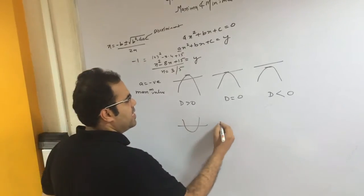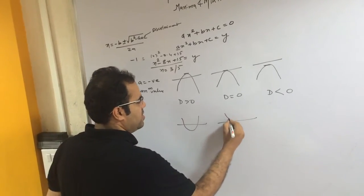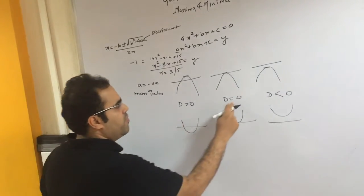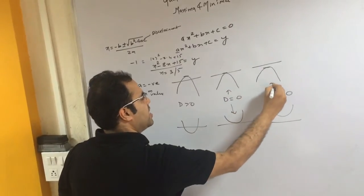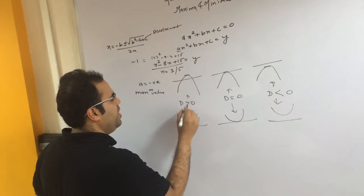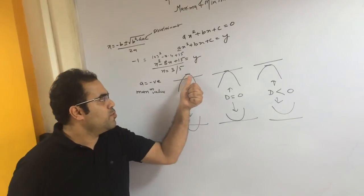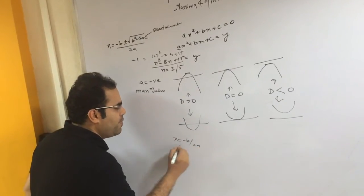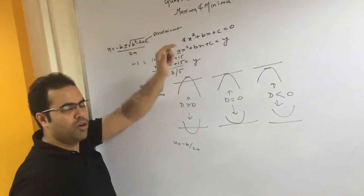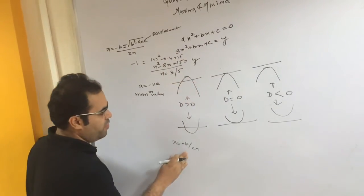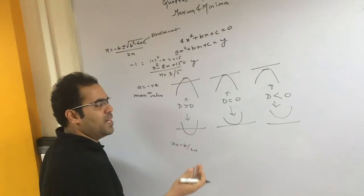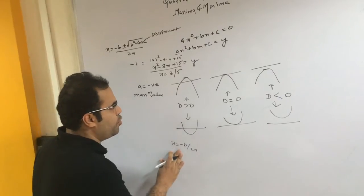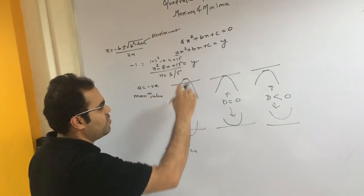To summarize both cases simultaneously: when a is positive, D > 0, D = 0, or D < 0 all give a minimum value; when a is negative, all three discriminant cases give a maximum value. In both situations, the extreme value occurs at x = −b/2a, which you derive by differentiating the expression — though we won't cover differentiation in this video. So at x = −b/2a you get the maximum value when a is negative, and the minimum value when a is positive.